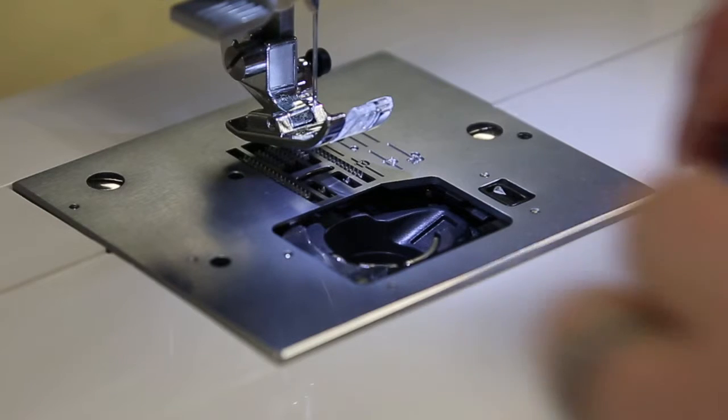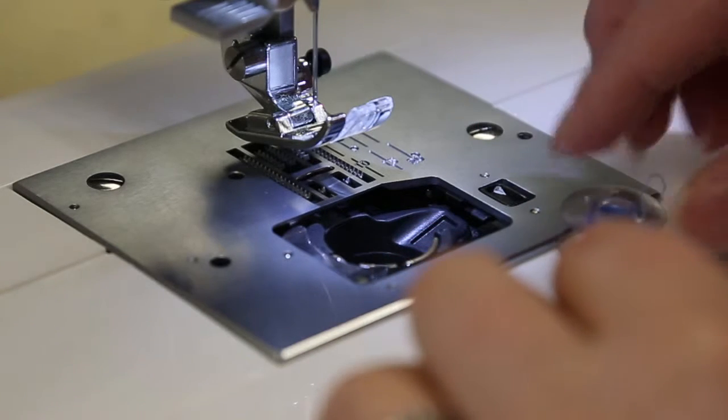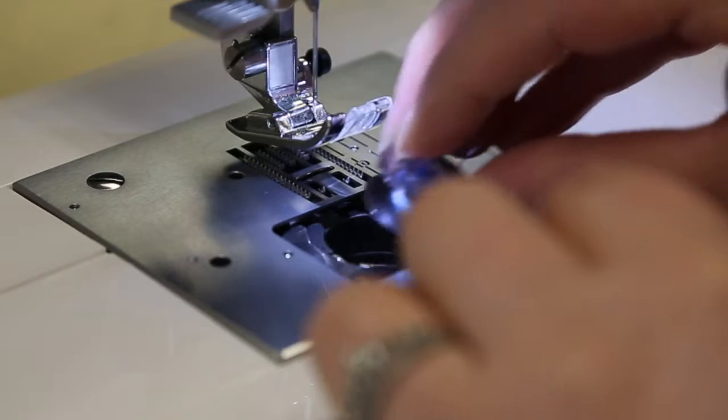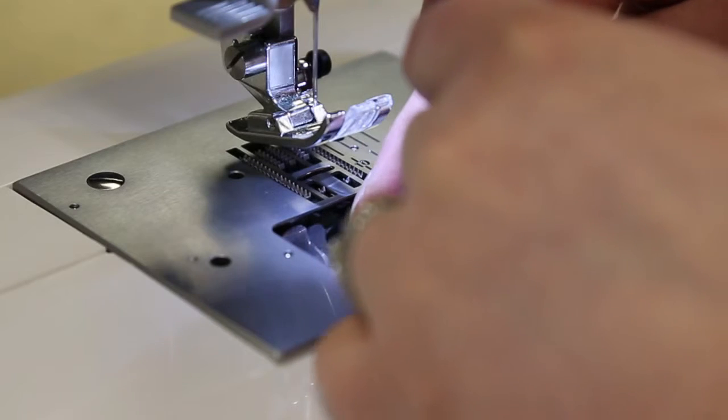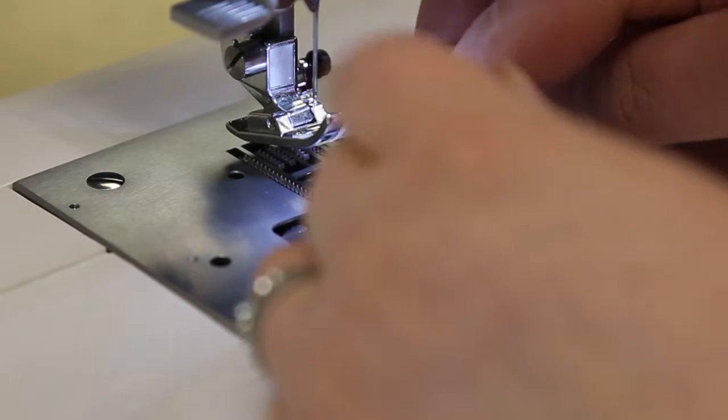To place the bobbin into the bobbin holder, raise the presser foot. Press the needle up-down button and set the needle in the up position. Pop off the bobbin cover and place the bobbin in its holder with the thread unwinding counter-clockwise.